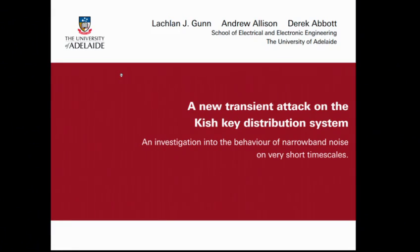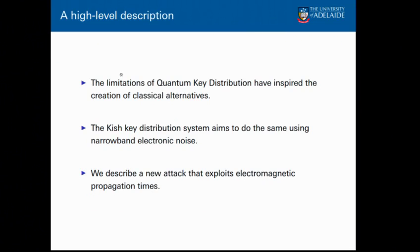I'm Lachlan Gunn. I've been working on a cryptographic scheme introduced in the last 10 years or so called the Kish Key Distribution scheme. Quantum key distribution was invented in the mid-80s and brought hope because it could be proven secure based on the laws of physics. But it involves single photons, requiring expensive detectors and is sensitive to failures. People have been trying to come up with classical systems providing the same security without these downsides. One such system is the Kish Key Distribution system, first introduced around 2005.